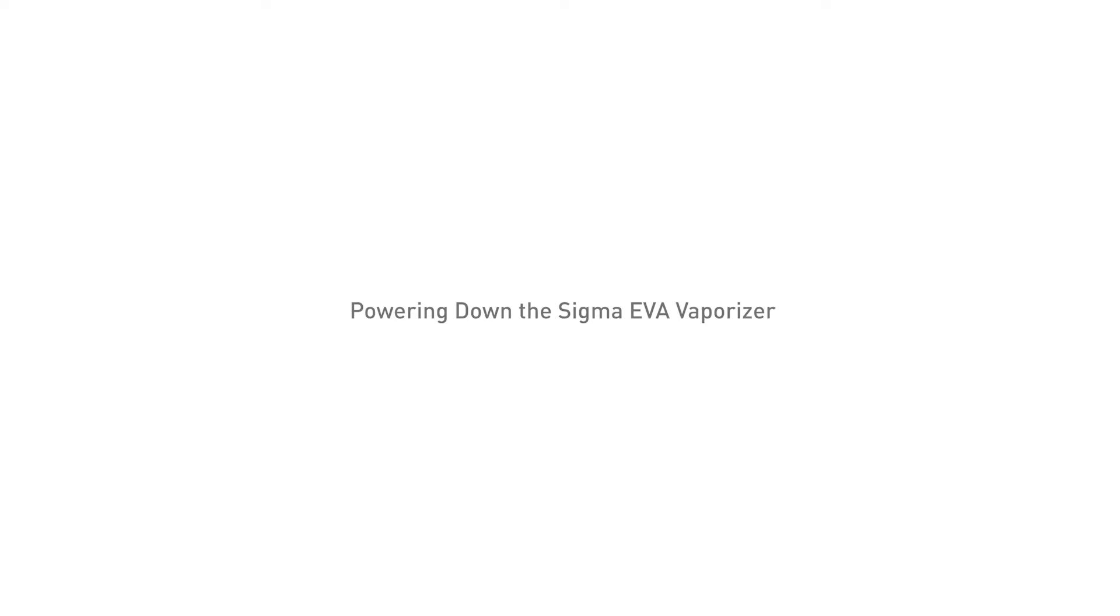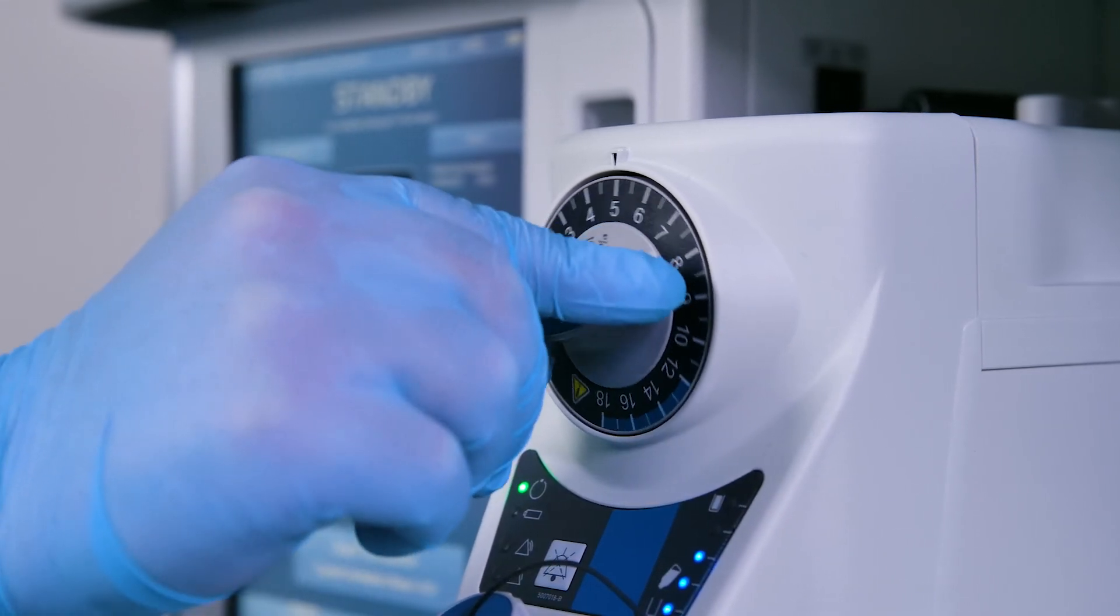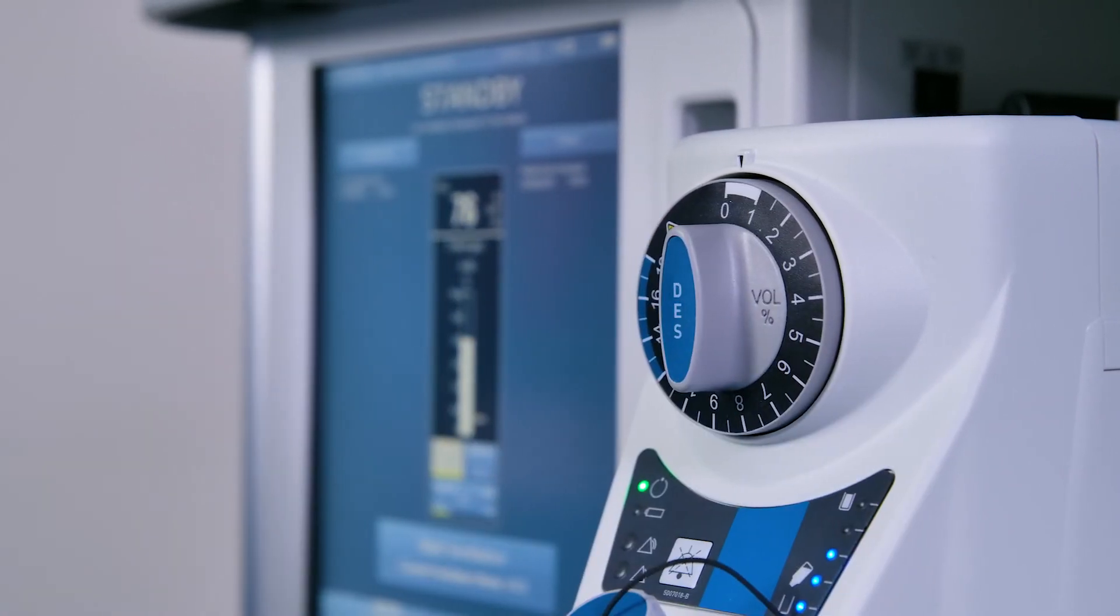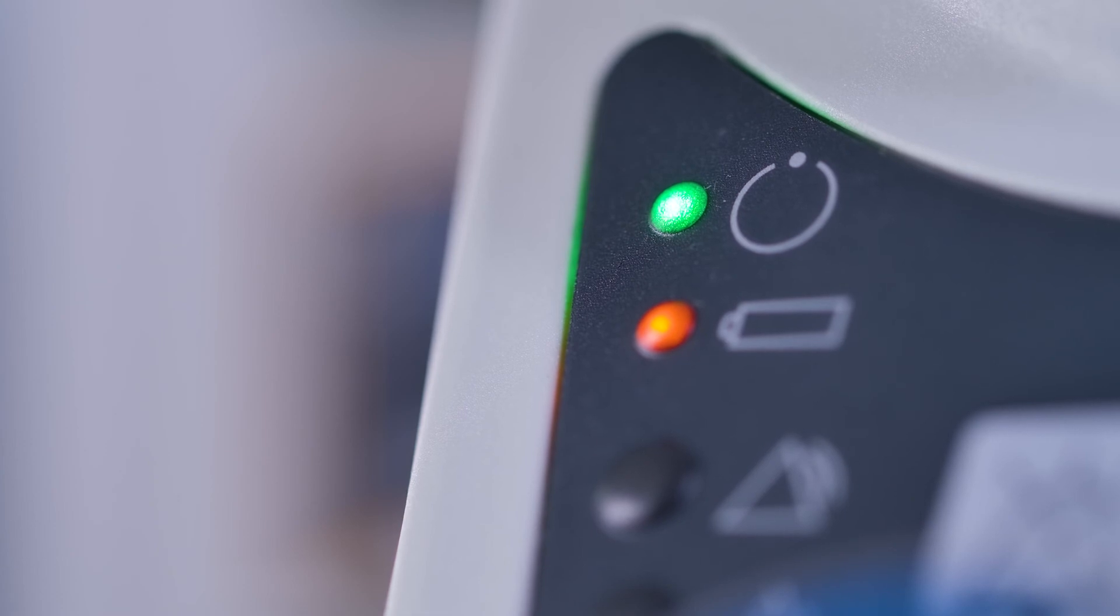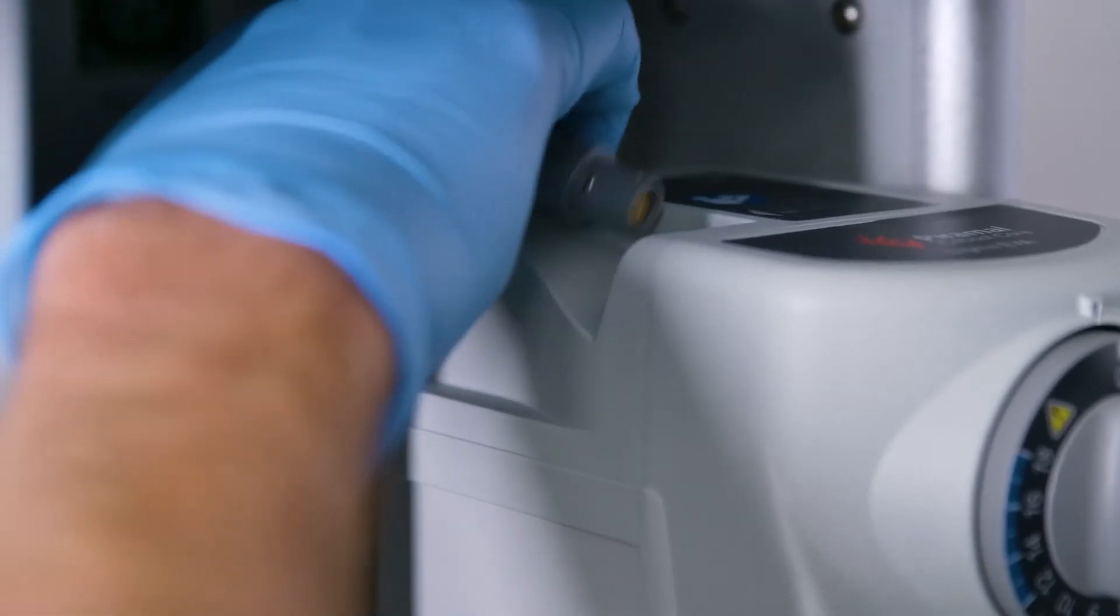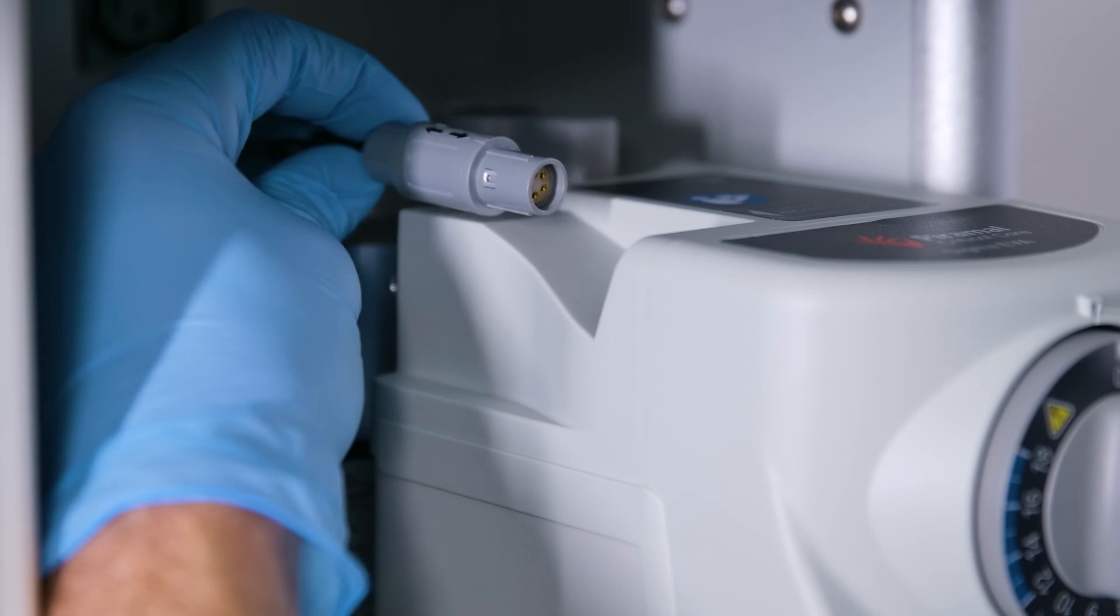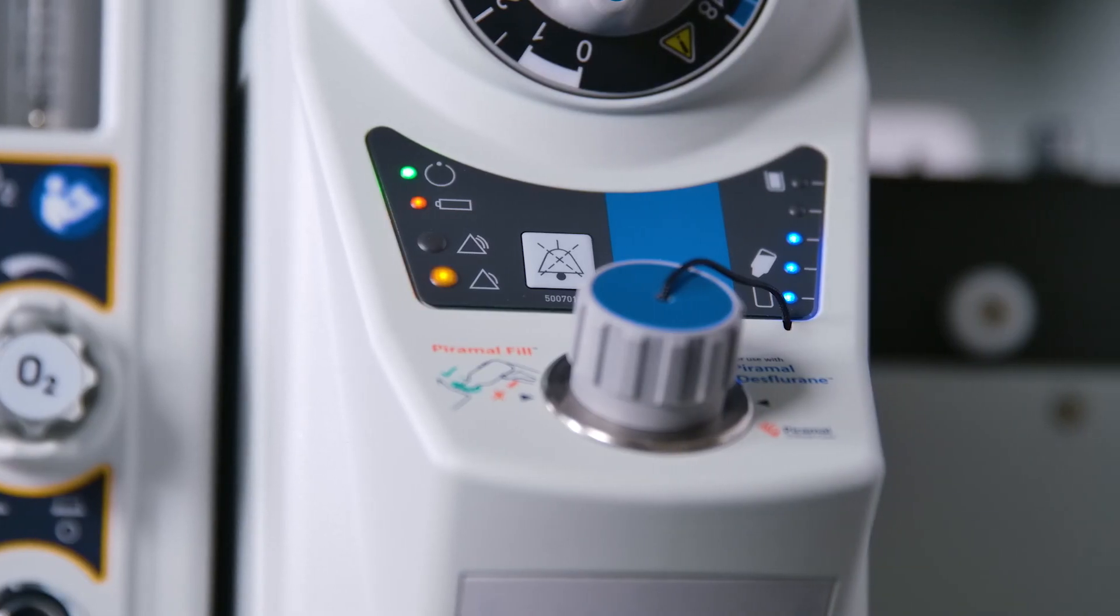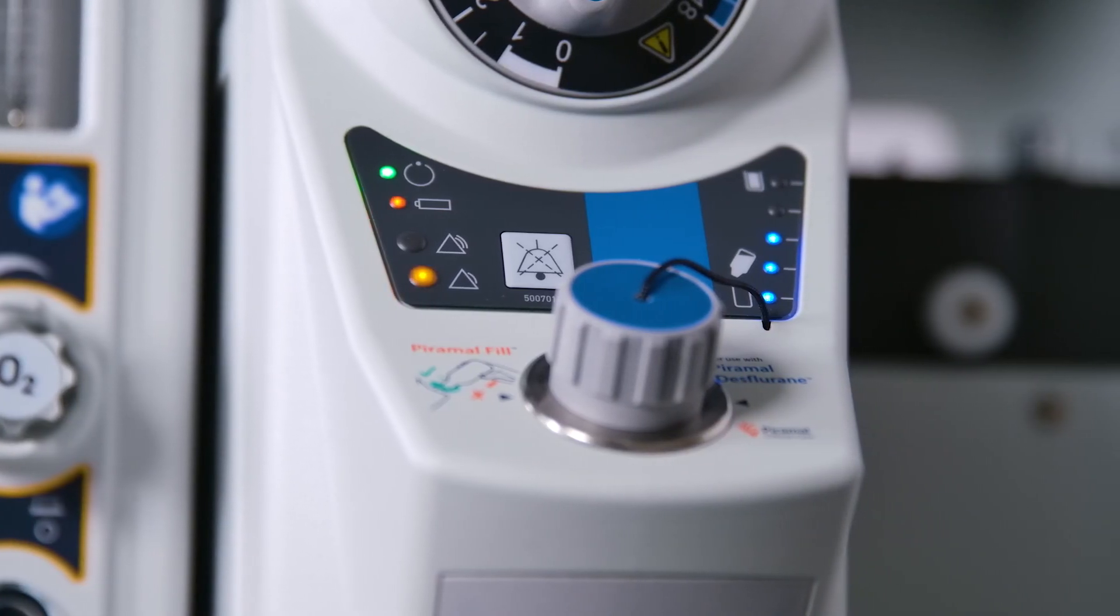Powering down the Sigma EVA vaporizer. Set the concentration control dial to the 0% position. The vaporizer will revert to standby mode. Disconnect the electrical power supply cable. The vaporizer will automatically exit operating mode and power down.